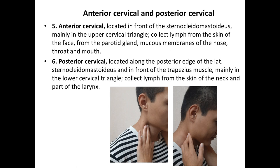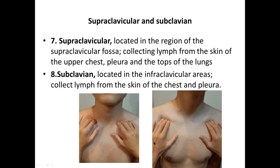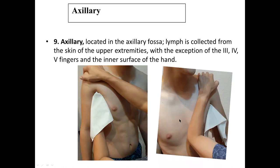The next groups are anterior cervical and posterior cervical lymph nodes. Anterior cervical nodes are located in front of the sternocleidomastoid muscle, and posterior cervical nodes are located along the posterior edge of this muscle. Next groups are supraclavicular and subclavian lymph nodes: supraclavicular are located in the region of the supraclavicular fossa, and subclavian are located in the infraclavicular area. Here I also demonstrate how to correctly palpate these lymph nodes.